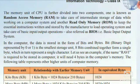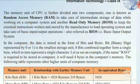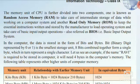The memory unit inside the CPU is further divided into two components. The first is Random Access Memory (RAM), which is used for intermediate storage of data while working on the computer system. The second is Read Only Memory (ROM), which keeps essential instructions written by the manufacturer to load the operating system and take care of basic input/output operations, also referred to as BIOS — Basic Input Output System. The BIOS is stored in the Read Only Memory.